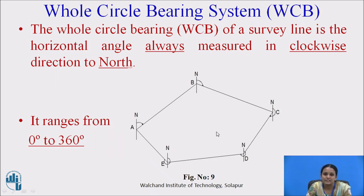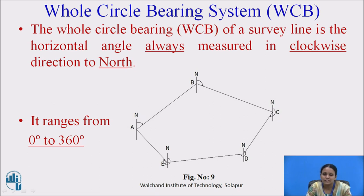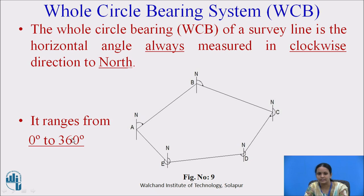Whole circle bearing system. In the whole circle bearing system, the angles are always measured from the north direction in clockwise. Each bearing of the respective survey line is measured from the north direction. The bearings of lines are measured with respect to north direction clockwise only, so they can range from 0 to 360 degrees.